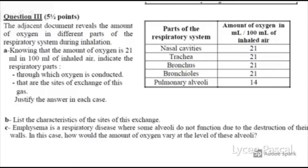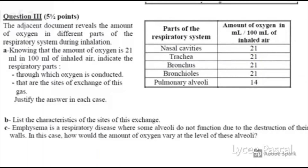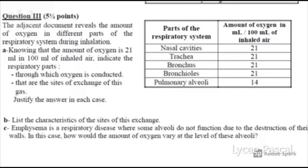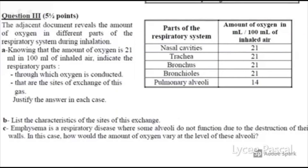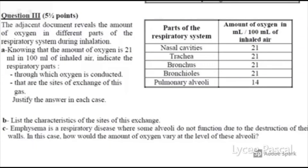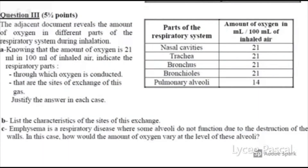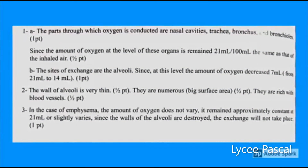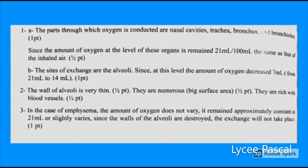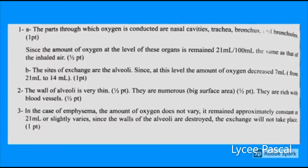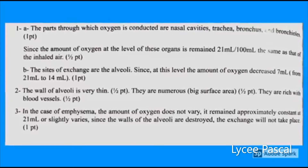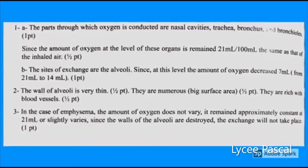The second question asks for the characteristics of the exchange site. The alveoli are rich in blood vessels, have a large surface area, and have a thin wall. For the last part: emphysema is a disease where some alveoli do not function due to destruction of their walls. In this case, the amount of oxygen does not vary — it remains approximately constant at 21 ml — since the walls of the alveoli are destroyed and exchange will not take place.